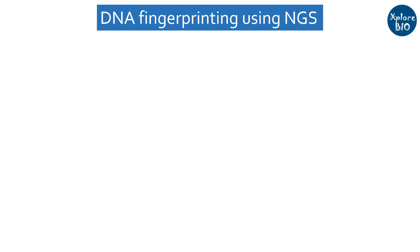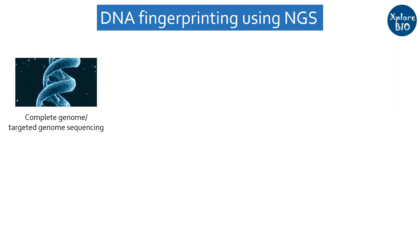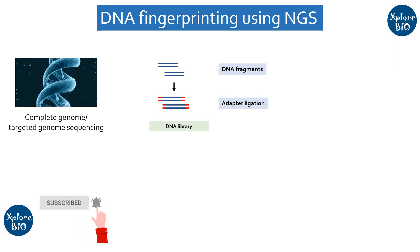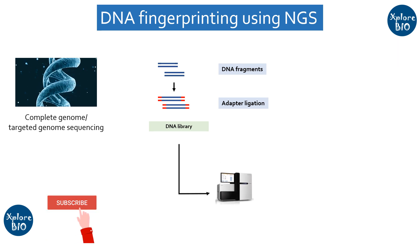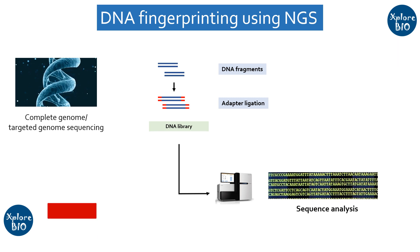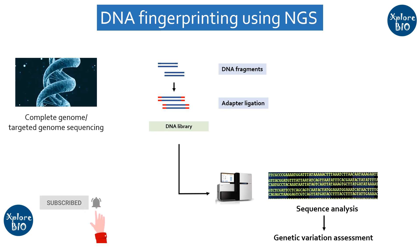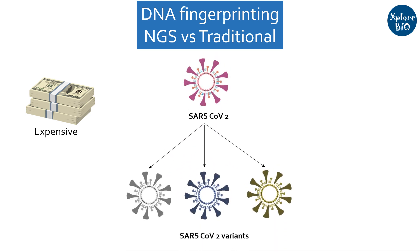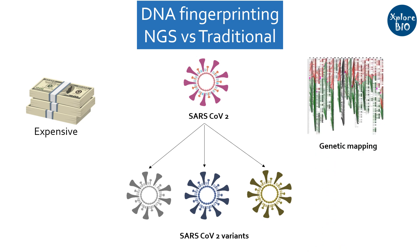In modern times, DNA Fingerprinting is also done using next-generation sequencing technologies, in which the targeted genome or entire genome of individuals is sequenced to generate a high-resolution genetic profile. This includes DNA extraction, fragmentation, and adapter ligation to generate a library. Using adapter-specific primers, high-throughput sequencing is done using Illumina, PacBio, or Oxford Nanopore sequencers. The resulting sequence data is analyzed using bioinformatic tools to identify genetic variations. Although NGS-based fingerprinting is more expensive than traditional methods, it has tremendously helped in identifying variants of viruses such as novel coronavirus, and is very useful in high-resolution genetic mapping and trait-linked SNP identification.